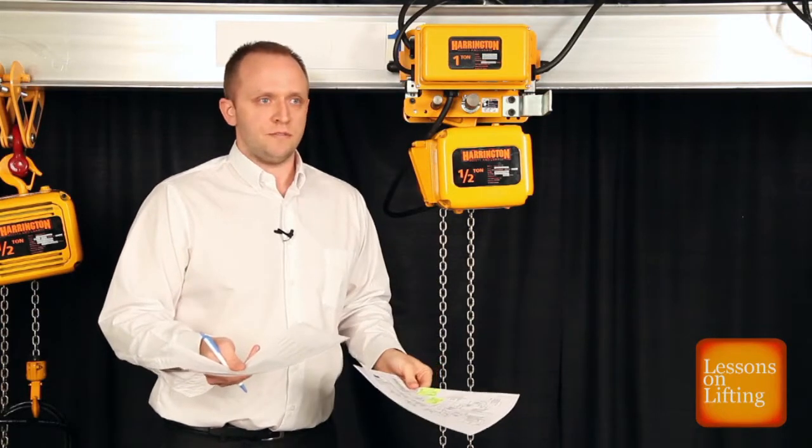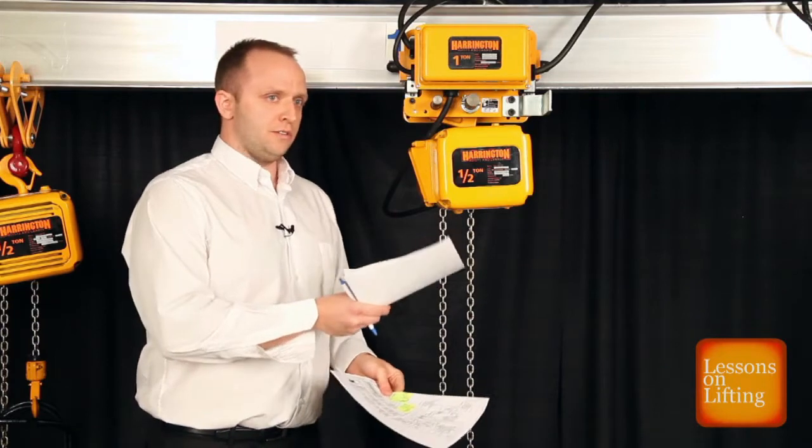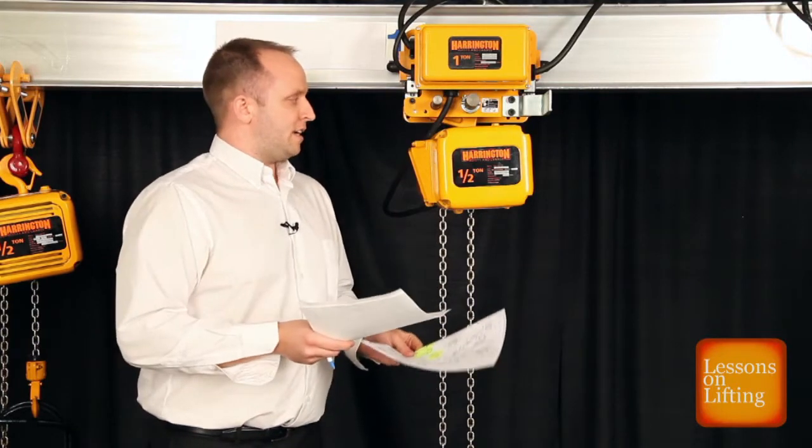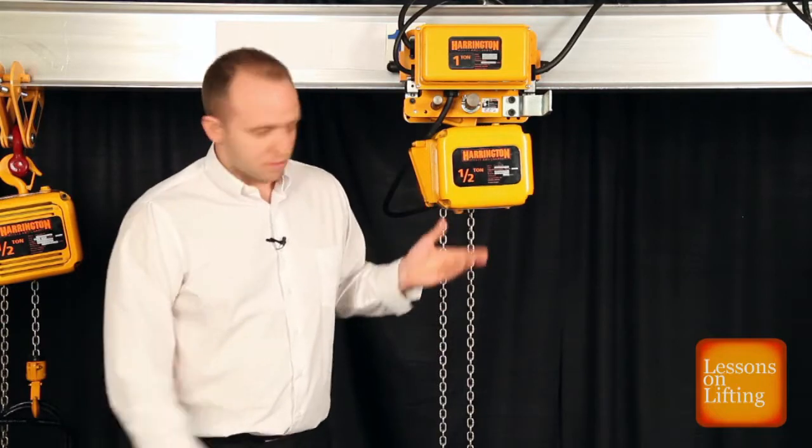One is right here behind the hoist control cover. The other is in the trolley motor section of the unit, which is on the reverse side of this beam. Now that we've established all that information, we know what voltage we're going from to, we know what particular unit we're working with, we're ready to get started. And like I said, this is one of the access points, and that's where we're going to begin.